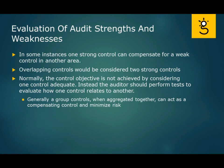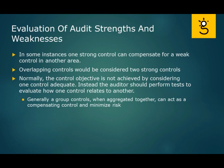As we continue to talk about audit strengths and weaknesses, remember that in some instances one strong control might be able to compensate for a weak control in another area. You may also look at overlapping controls as being considered two strong controls. Normally, the control objective is not achieved by considering one control adequate. Instead, you should perform tests to evaluate how one control might relate to other controls. Generally, a group of controls, when aggregated together, can act as a compensating control and minimize risk.